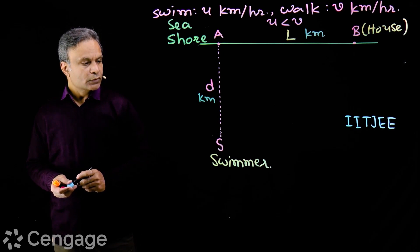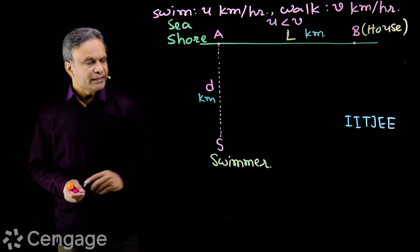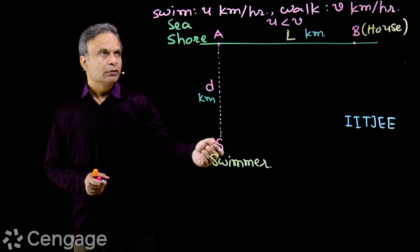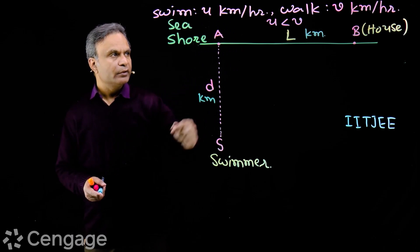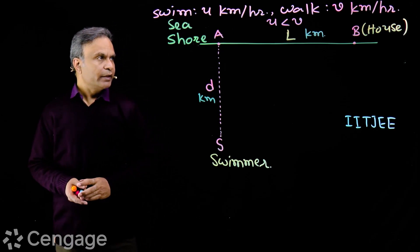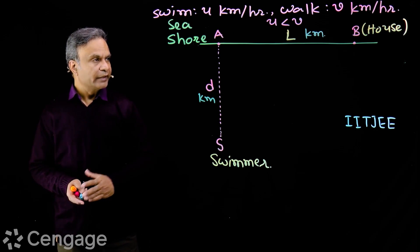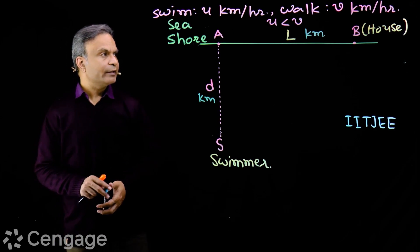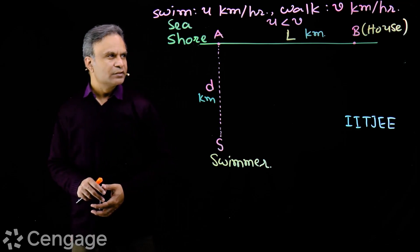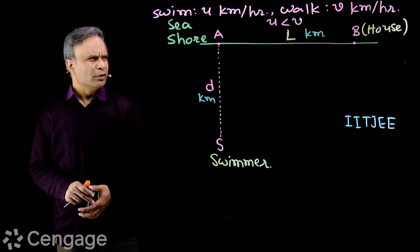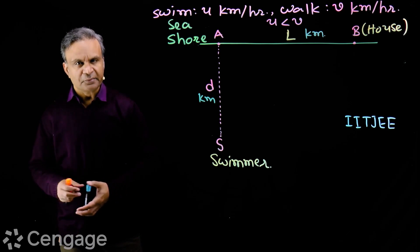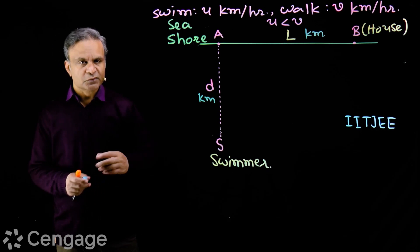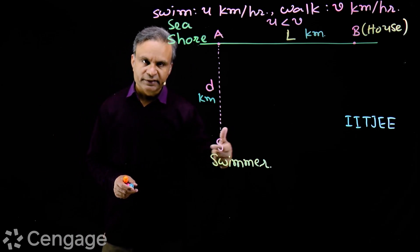Swimmer S can swim with a speed of U kilometers per hour and can walk with a speed of V kilometers per hour. Here U is less than V, which is what mostly happens generally.